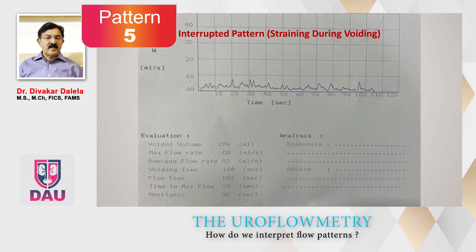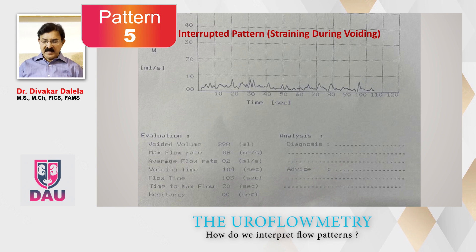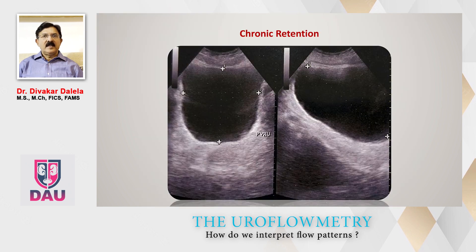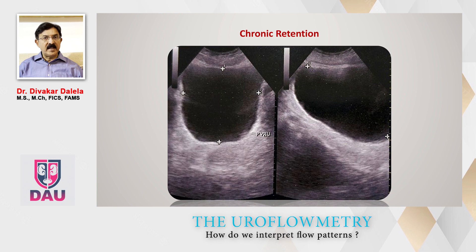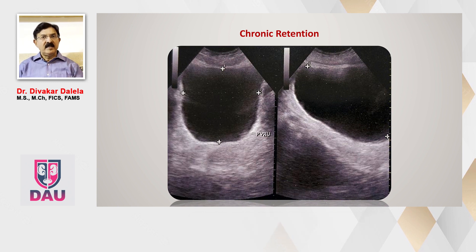Sometimes you get an interrupted pattern with low Qmax and more prolonged voiding time. The patient may strain a bit, producing some small peaks. In one example, the patient voided about 298 cc of urine, but a bladder scan shows the bladder is still full — these patients are in a state of chronic retention of urine. When asked to do a uroflowmetry test, they void by abdominal straining, empty only a portion of the bladder, and come back with a large post-void residual urine. If you notice an interrupted voiding pattern with only small amounts voided, please keep this in mind.